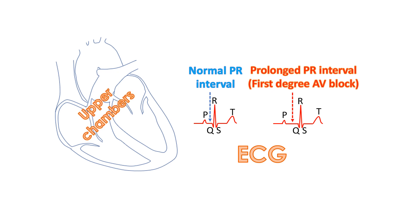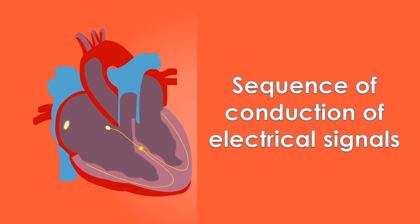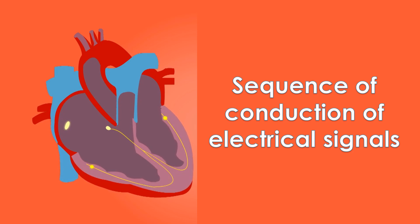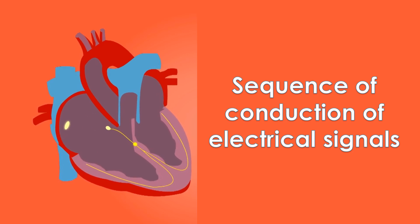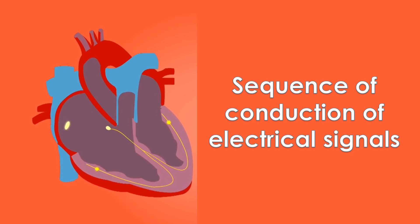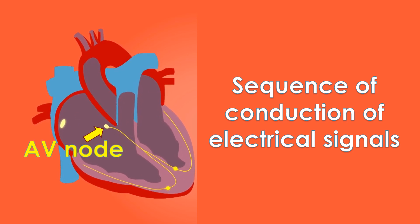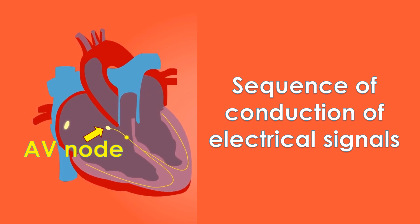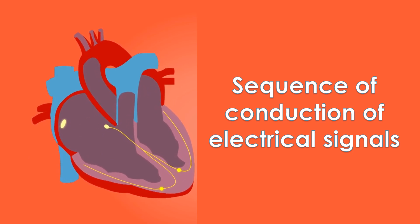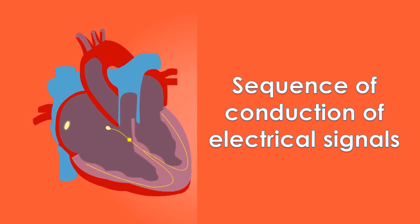Atria are the upper chambers of the heart and ventricles the lower chambers. This interval is known as the PR interval — the time taken for the electrical activity to travel from the upper chambers to the lower chambers. Most of it is due to a delay produced in the atrioventricular or AV node at the junction between the upper and lower chambers.